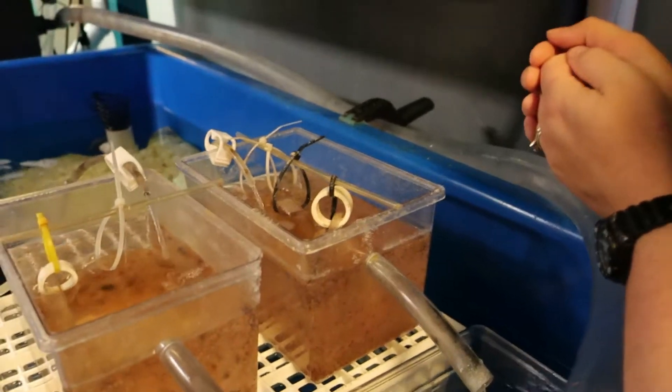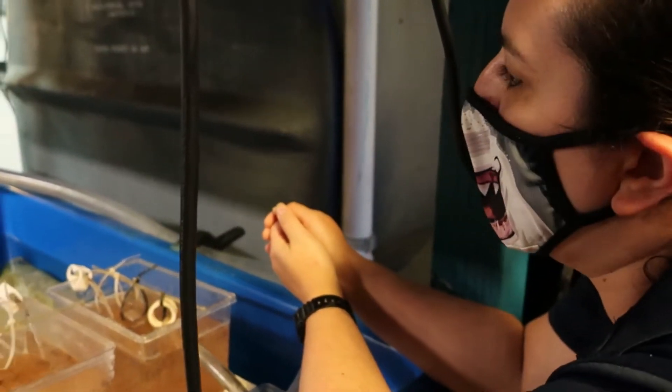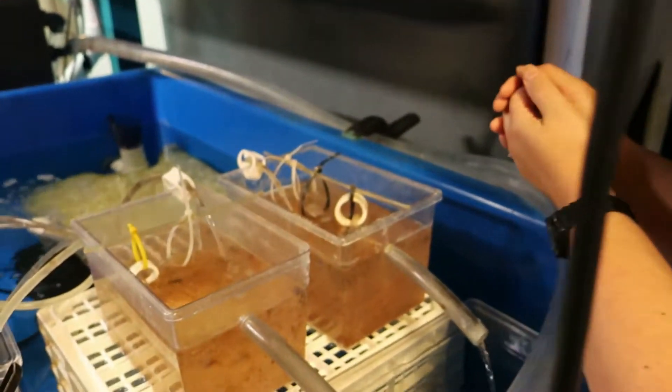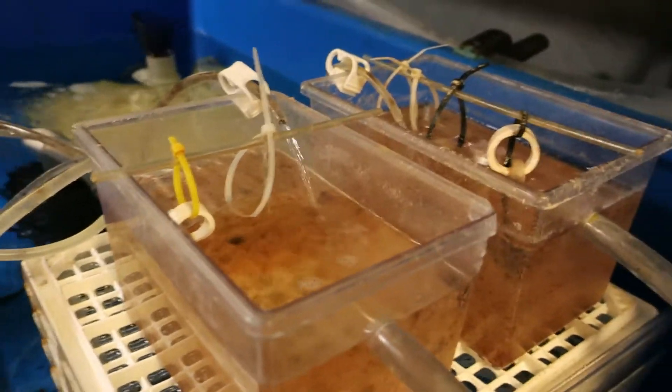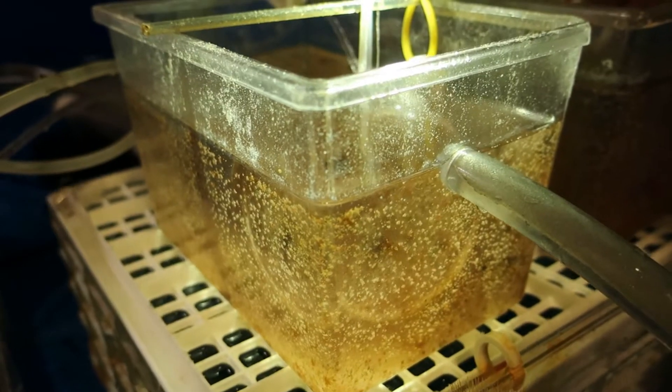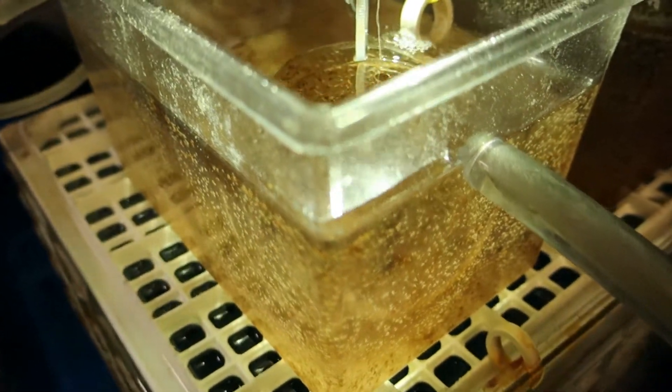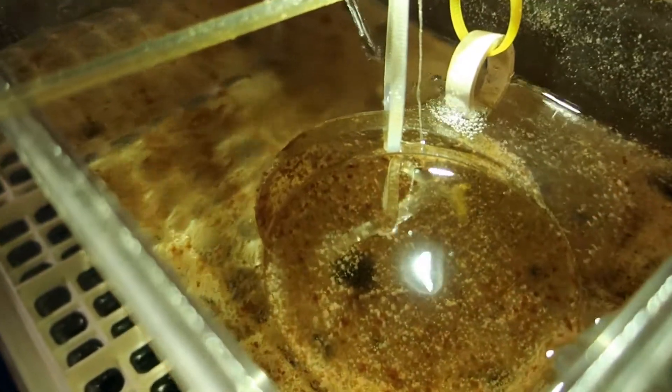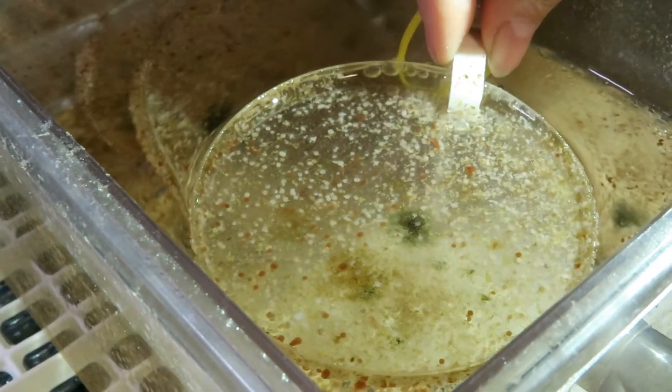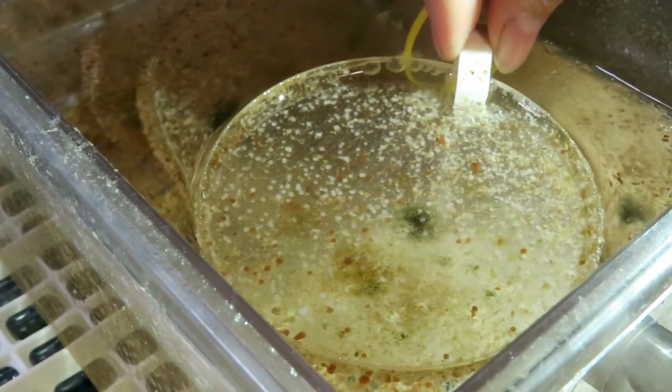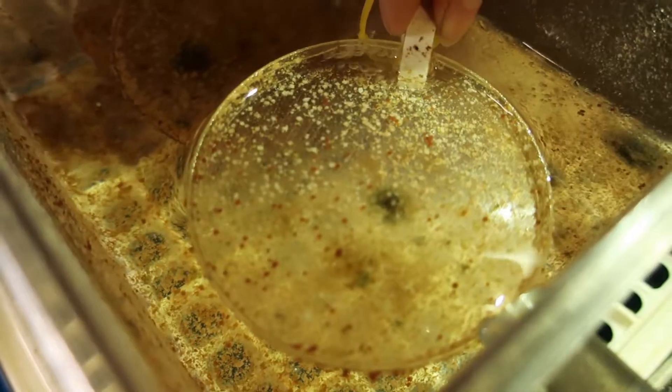The production for jellyfish takes place in several steps. The first thing happens on exhibit when the males release sperm for the females, and then they fertilize their eggs and have a planula larva, which is microscopically small, and those settle out onto these plates which were originally in the exhibit and create polyps.